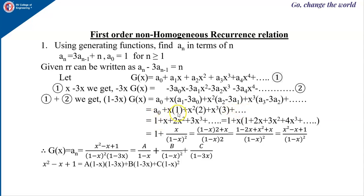So a₀ = 1, and the series becomes 1 + x + 2x² + 3x³ + ··· which equals 1 plus x·(1 + 2x + 3x² + 4x³ + ···), which equals 1 + x/(1 − x)². This simplifies to (1 − 2x + x² + x)/(1 − x)² = (x² − x + 1)/(1 − x)².